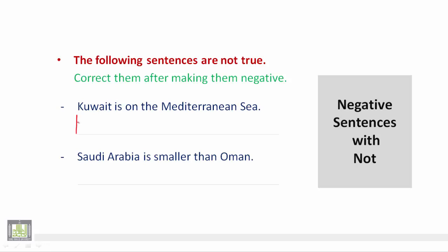So we say: 'Kuwait is not on the Mediterranean Sea; rather, it is on the Arabian Gulf' — بل تقع على الخليج العربي.